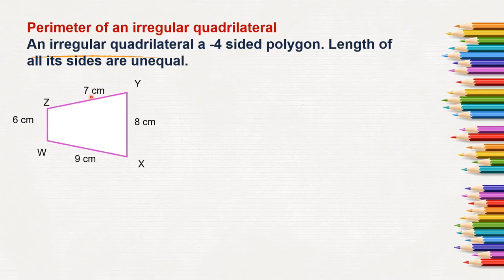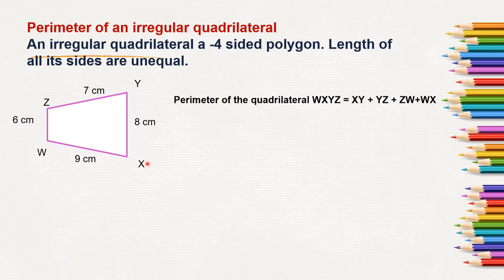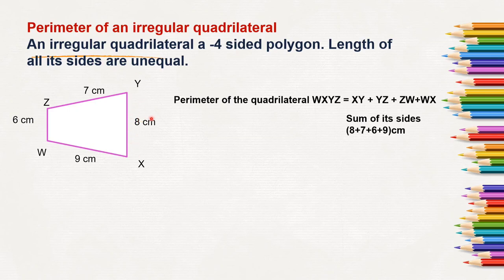Even though it is unequal, we just have to add all its sides to find out the perimeter of this given quadrilateral. So the perimeter of quadrilateral WXYZ is equal to XY plus YZ plus ZW plus WX — the sum of all sides. That is XY 8 cm, YZ 7 cm, ZW 6 cm, and WX 9 cm. When we add all its sides, we get the total as 30 cm. So the perimeter of quadrilateral WXYZ is 30 cm.